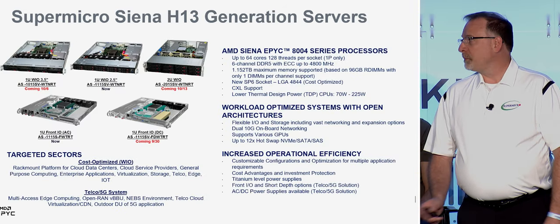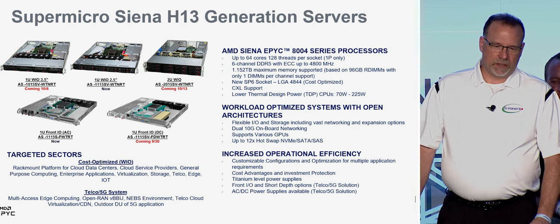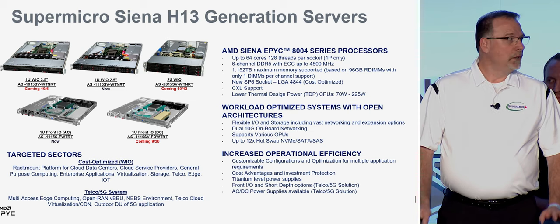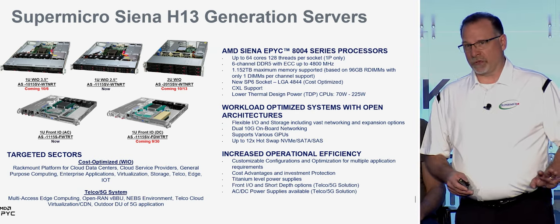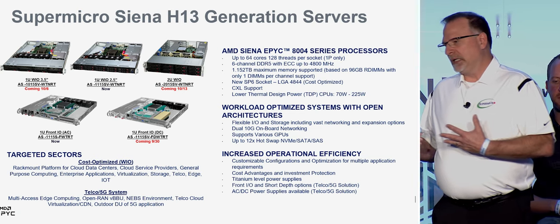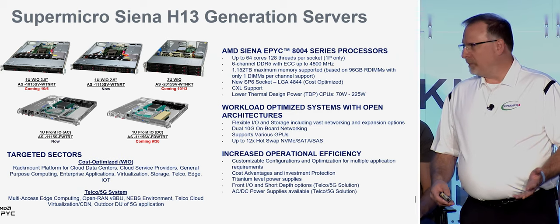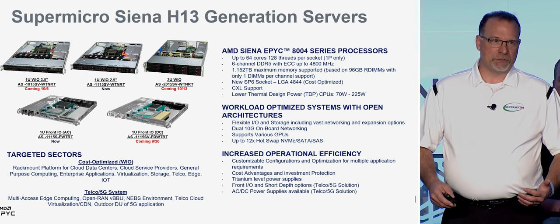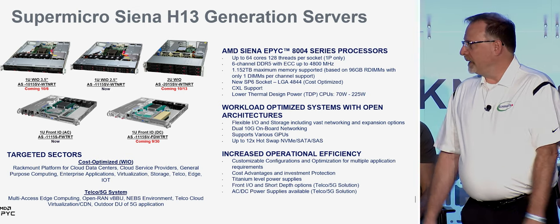Supermicro has just introduced support for the AMD EPYC Sienna line — a value line of servers with up to 64 cores in a socket, single-socket only, and only six DIMMs per system. This gives you flexibility for a lower memory amount to get optimal memory performance, whereas the other servers require all 12 memory channels populated. You can have 96 gigs of RAM instead of 192 gigs and still have optimal memory performance. These come in 1U and 2U varieties, with front I/O options and a DC power option available.